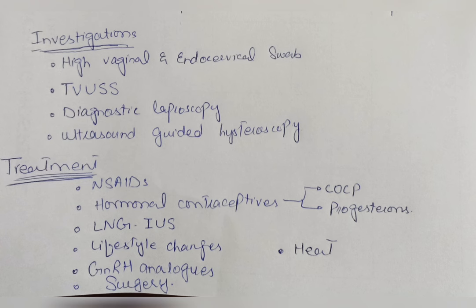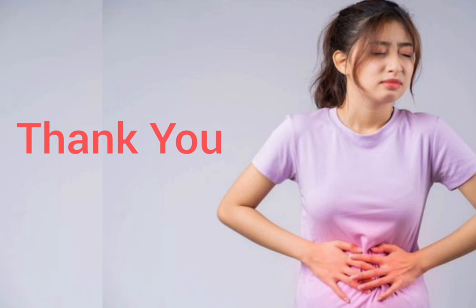GnRH analogs are short-term and not a first-line treatment because they result in a hypoestrogenic state. The most effective treatment is surgery — surgical laparoscopy, adhesiolysis, drainage of endometriomas, or hysterectomy can be performed for the treatment of dysmenorrhea. That is all for dysmenorrhea — hope you liked the video. Please remember me in your prayers. Thank you so much. Allah Hafiz.